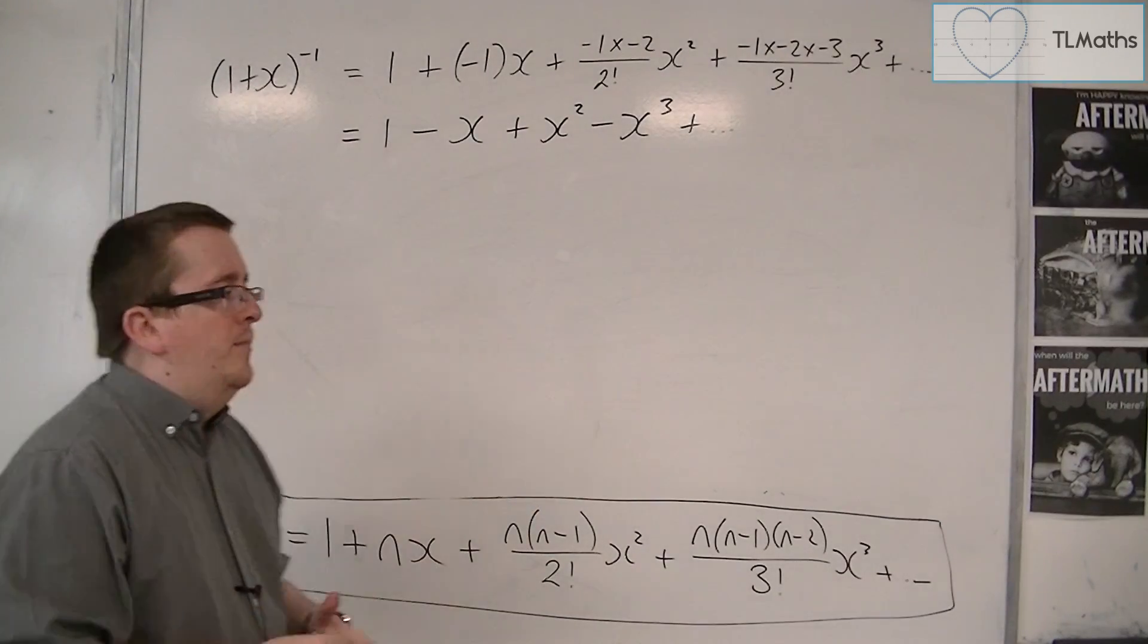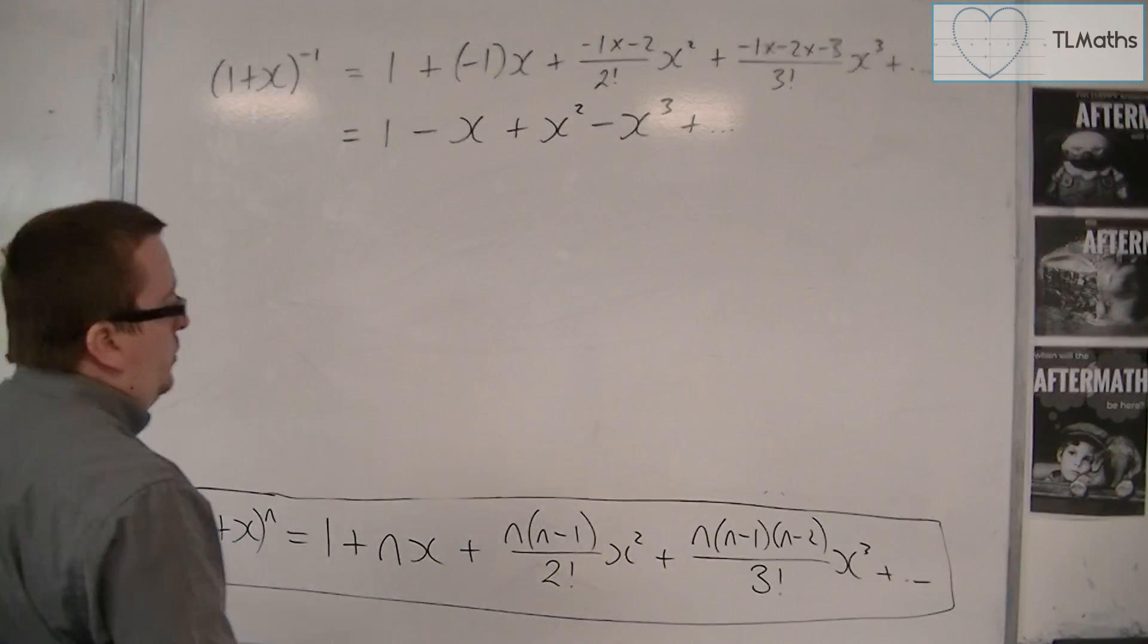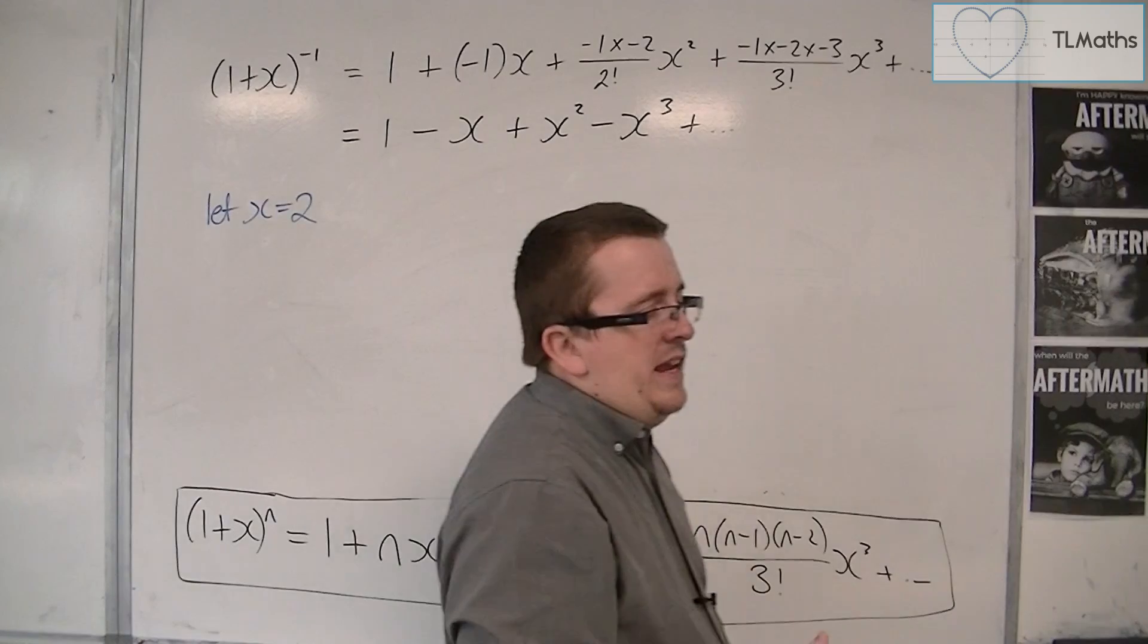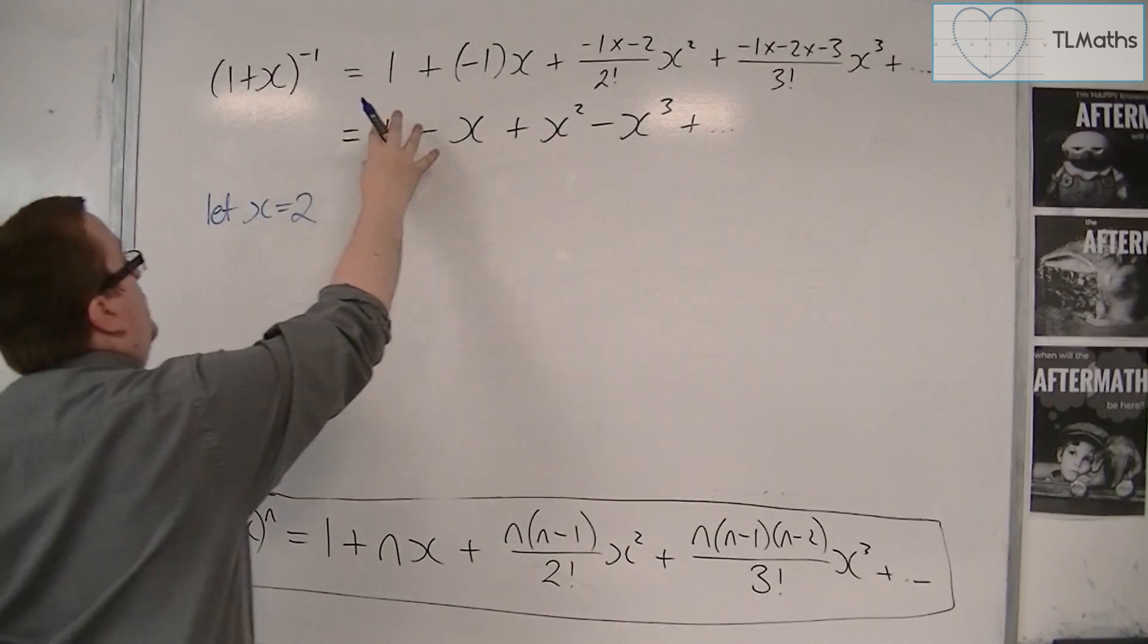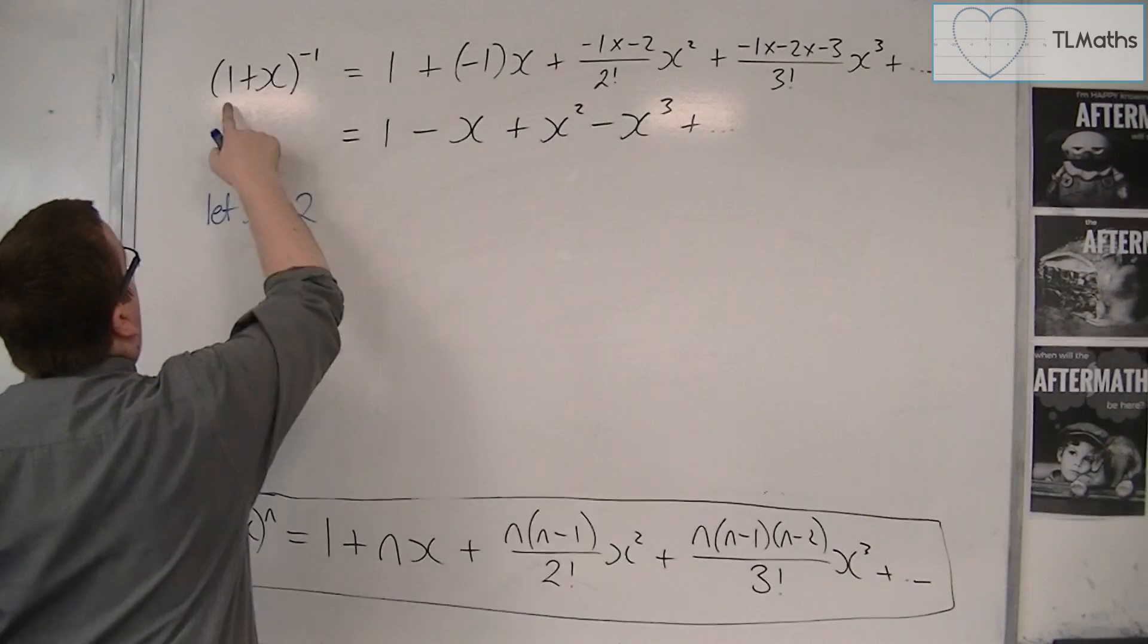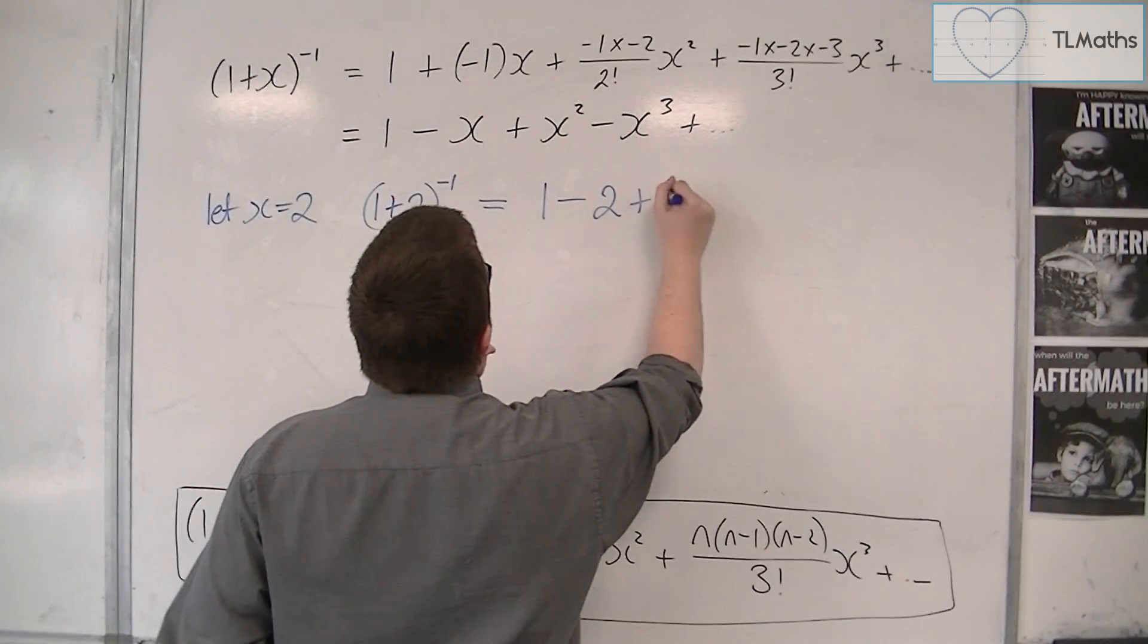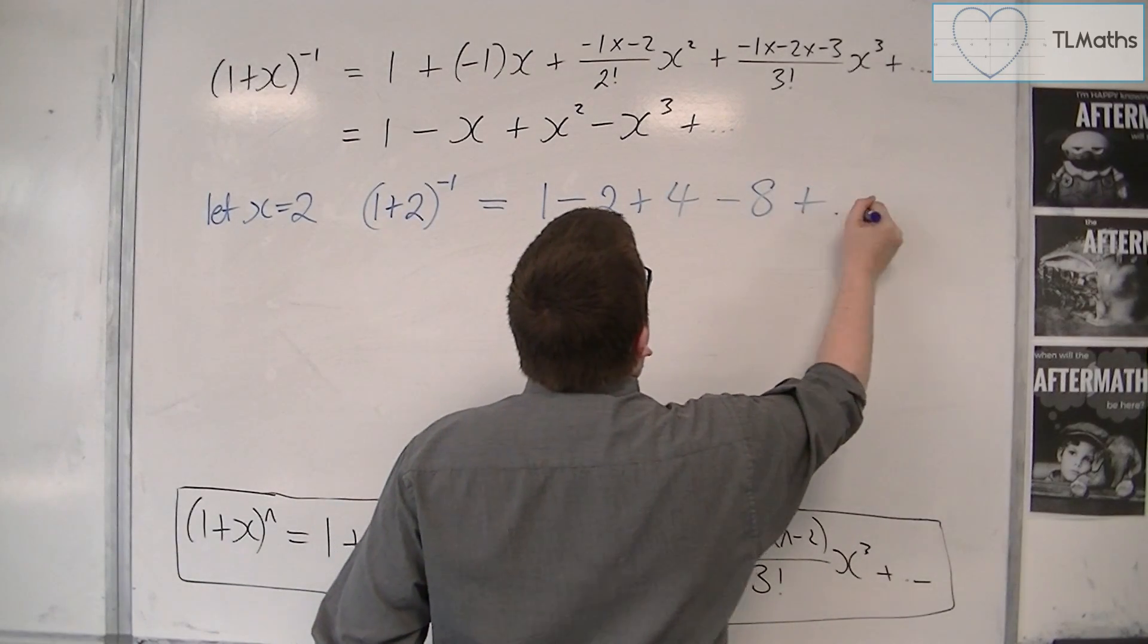Now, let's say we had x being equal to 2. What we're going to do is see whether the left-hand side, whether 2 being put into that, is the same as 2 being put into the right-hand side. So that would mean that we would have 1 plus 2 to the minus 1 being equal to 1 minus 2 plus 2 squared, so 4, take away 2 cubed, so 8 plus other terms.